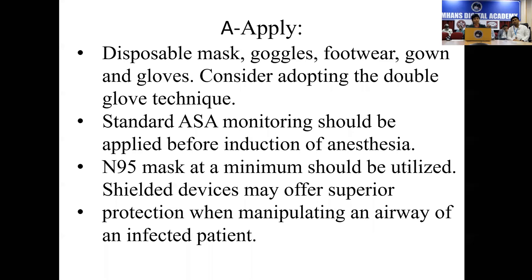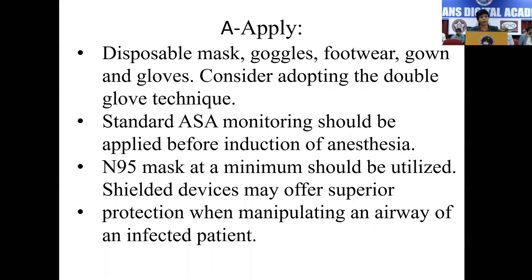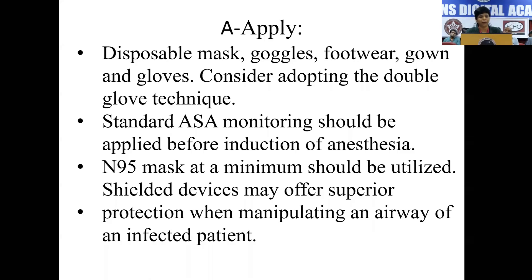The most important thing for people who are going to be managing the airway: you need to have a team. You should be having it done in a negative pressure room, but not all places have negative pressure rooms. An alternative is going to be a closed room. You need to have a strict policy where at least only three people are in the room and the rest are runners outside. Standard ASA monitoring has to be done: ECG, NIBP, and a pulse oximeter.